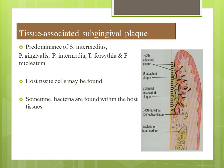In the tissue-associated sub-gingival plaque, there is a predominance of Streptococcus intermedius, P. gingivalis, Prevotella intermedia, Tannerella forsythia, and Fusobacterium nucleatum. Host tissue cells may also be found, and sometimes bacteria are found within the host tissues. There is a site specificity of plaque significantly associated with periodontal diseases. Marginal plaque is associated with initiation and development of marginal gingivitis, while supra-gingival and tooth-associated sub-gingival plaque is critical for calculus formation and root caries. Tissue-associated sub-gingival plaque is important in tissue destruction and characterizes different forms of periodontitis.